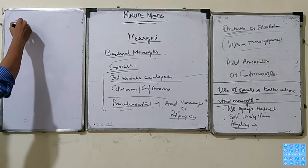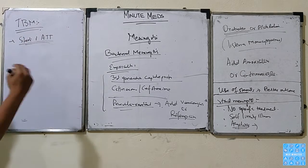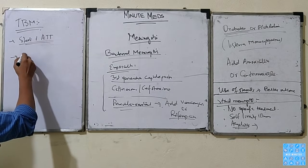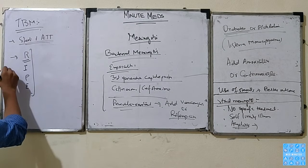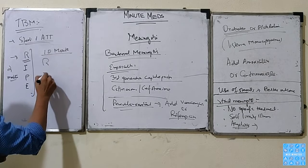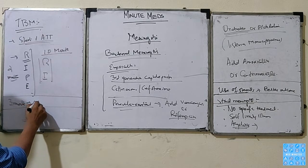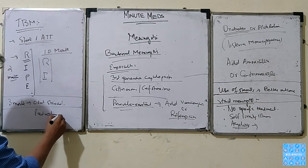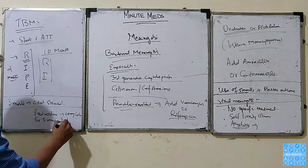For tuberculosis meningitis, we start anti-tuberculosis therapy as we do in pulmonary tuberculosis, but the duration is longer. The first two months are intensive therapy with four drugs: Rifampicin, Isoniazid, Pyrazinamide, and Ethambutol. The next ten months we use two drugs: Rifampicin and Isoniazid. In the first three months, we also use oral steroids — Prednisolone 60 mg — for three weeks, then taper.